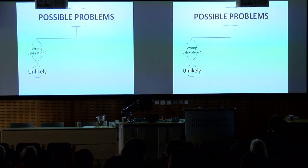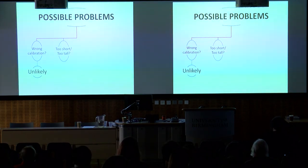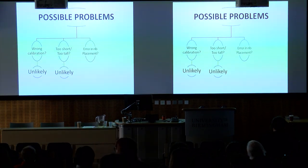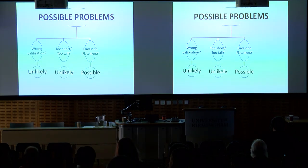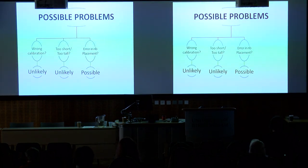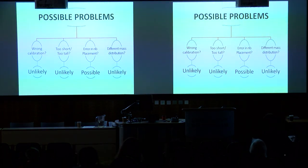We'd welcome anyone with more cadaver data to help test whether the equation holds up. Is the reconstruction too short or too tall? Unlikely — we've used the very latest data on afarensis and body proportions within hominoids generally. Error in rib placement is probably the biggest uncertainty; no model will be perfect, and rib positions vary between full inhalation and full exhalation. Is there a different mass distribution in afarensis? We doubt it — she's a hominoid and should fit the regression.